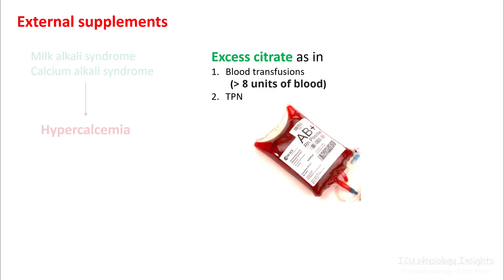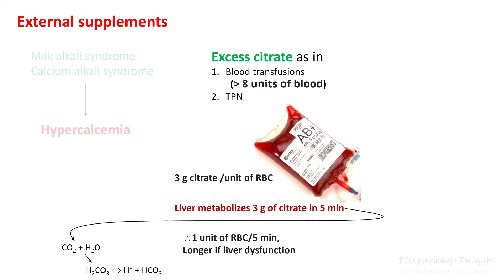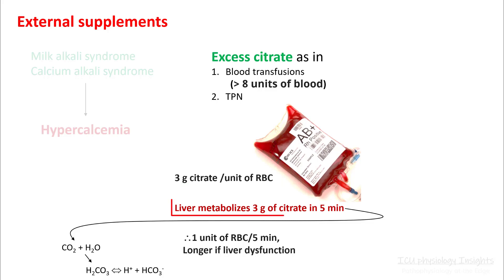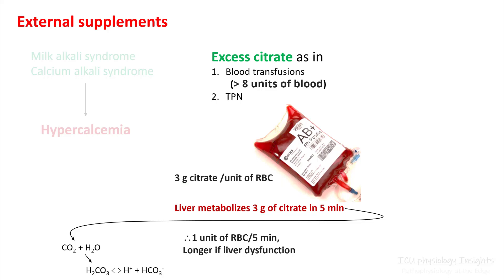Excess citrate as given in blood transfusions and TPN can also cause metabolic alkalosis. Citrate is metabolized to carbon dioxide and water, which can form bicarb if there is inadequate ventilation. One unit of packed RBCs contains three grams of citrate and the liver needs around five minutes to metabolize each unit, so if you give more than eight units of blood you can end up with significant metabolic alkalosis. Other causes include bicarbonate drips and bicarbonate pushes.